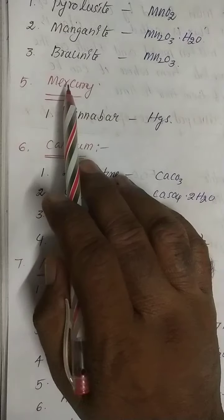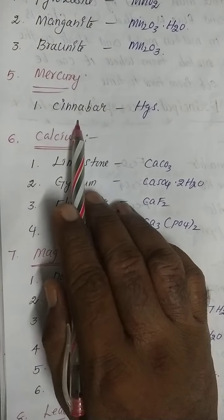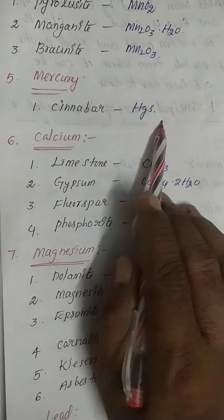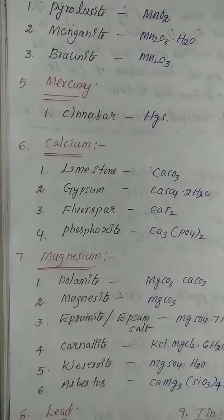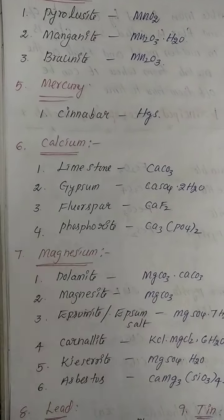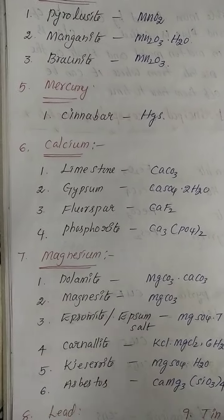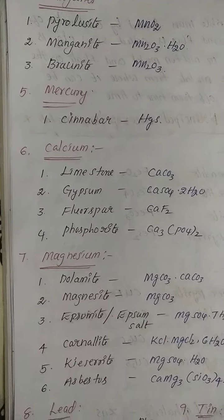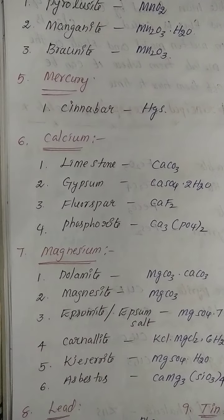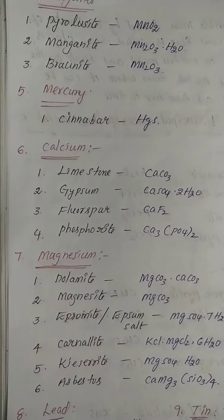Next is mercury. Cinnabar is one of the most important ores of mercury. The formula is HgS.